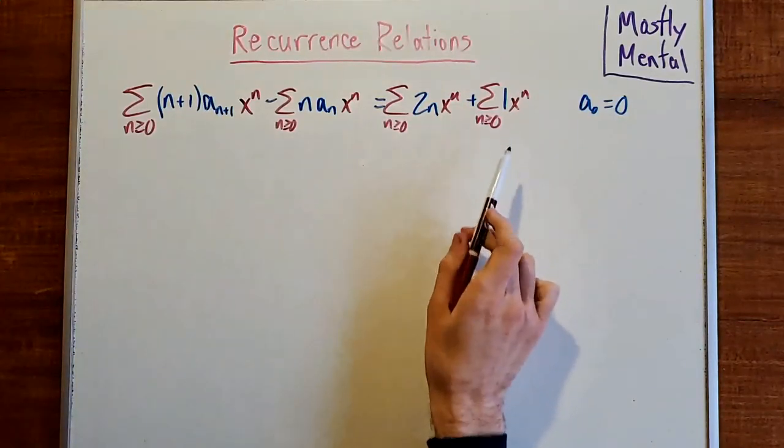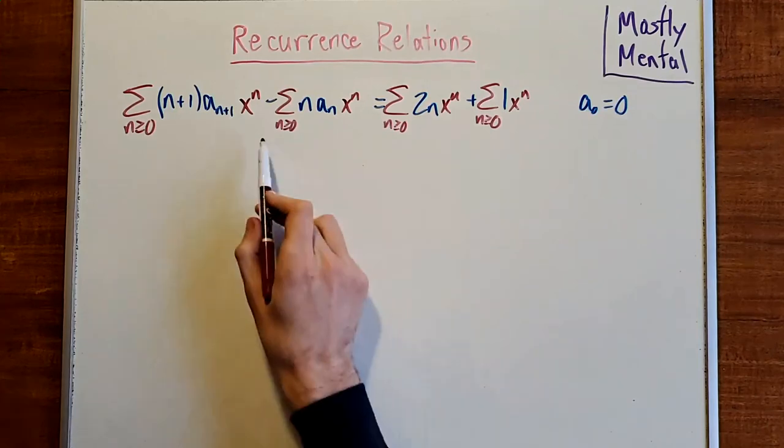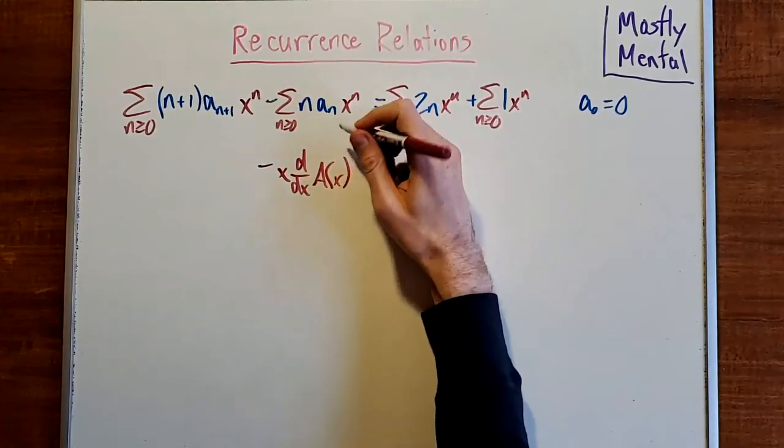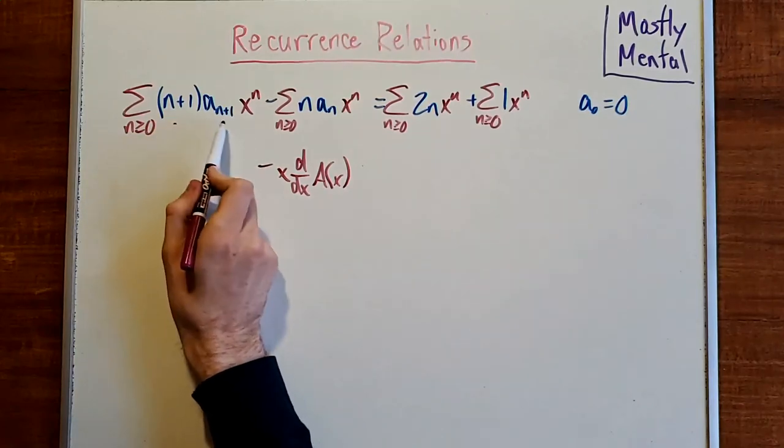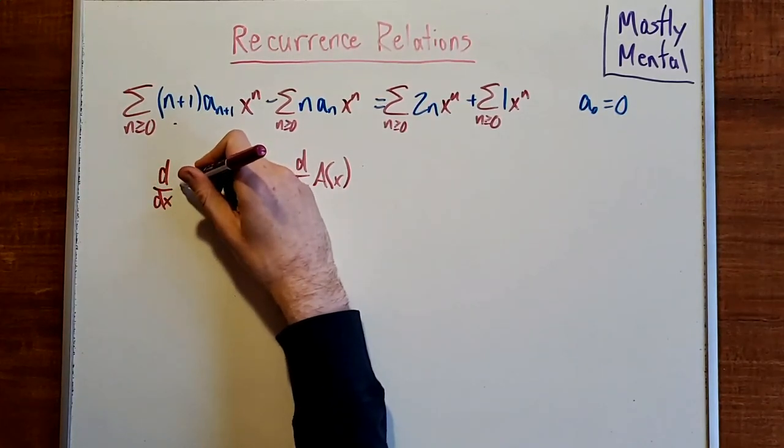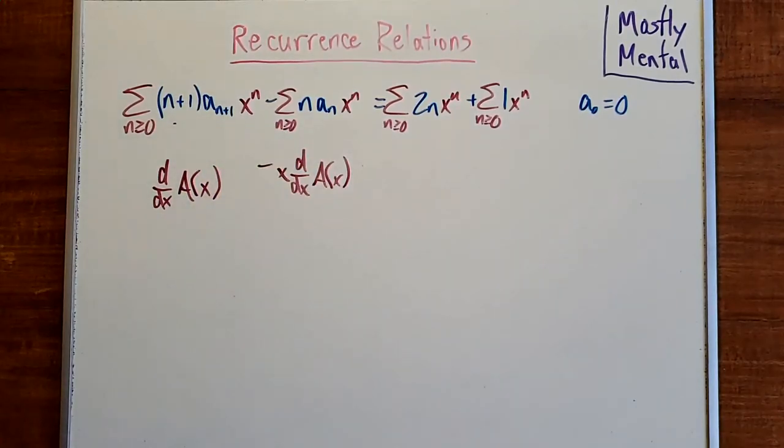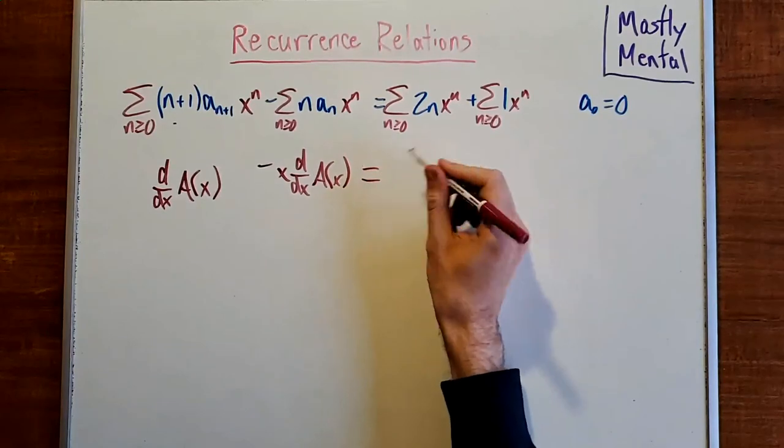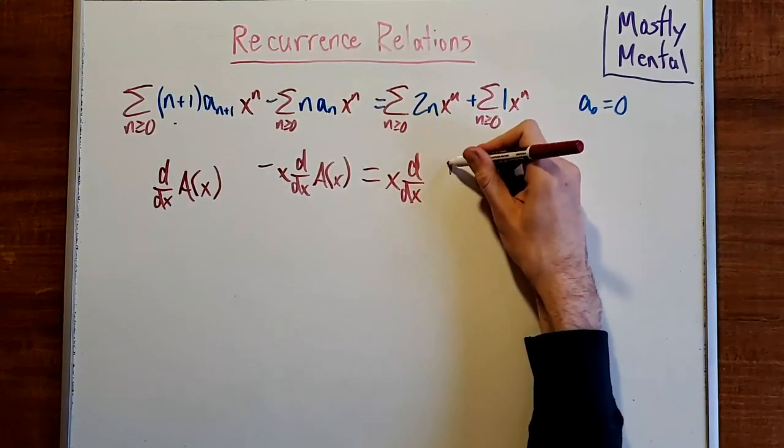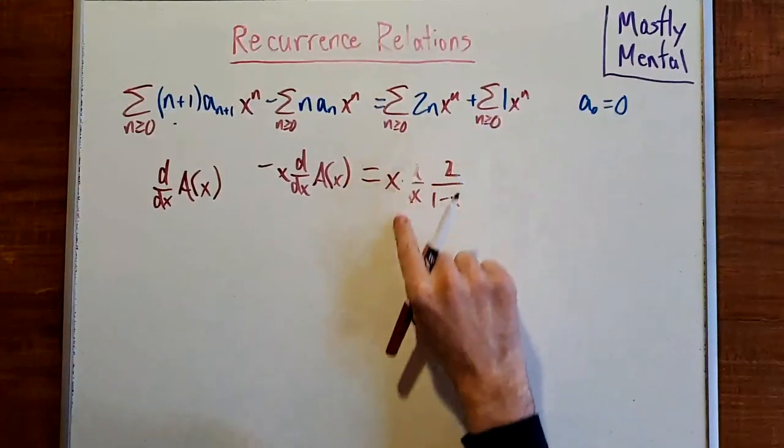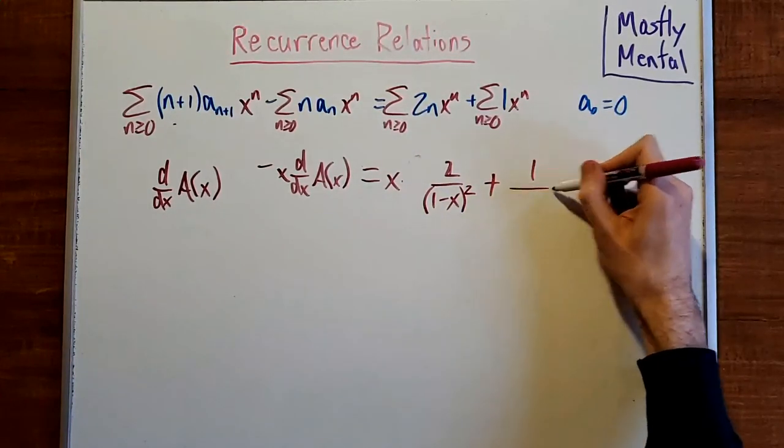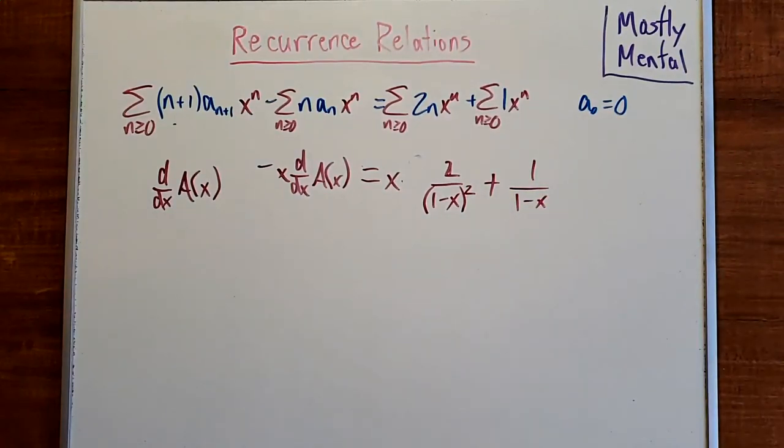And then we'll express each of these sums in terms of A(x). As we saw a moment ago, this one here is going to be x times the derivative of A(x). And this one here, because we have an n+1 here and an n here, is going to be just the derivative with no additional power of x. Then this sum here has an n in it, so we can write that as x times the derivative of the sum without the n, which is going to be 2 over 1-x. And that derivative is just going to be 2 over (1-x)^2. And then this sum here, once again, is 1 over 1-x.